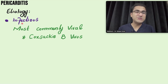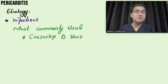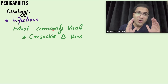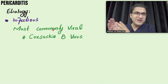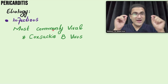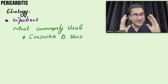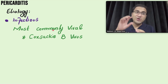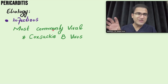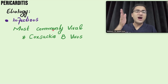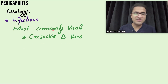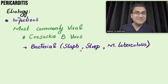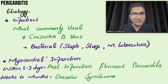Pericarditis is most commonly caused by viral infections. Coxsackie B virus is the most common viral cause. Our patient had a viral flu one week back, recovered, but the virus has now infected the pericardial tissue. It is very important to take a history of any previous infection. Pericarditis can also be caused by bacterial infections like Staph, Strep, or mycobacterial tuberculosis.